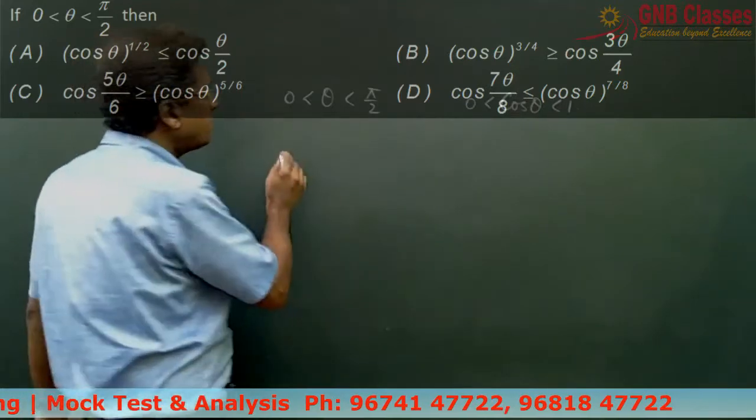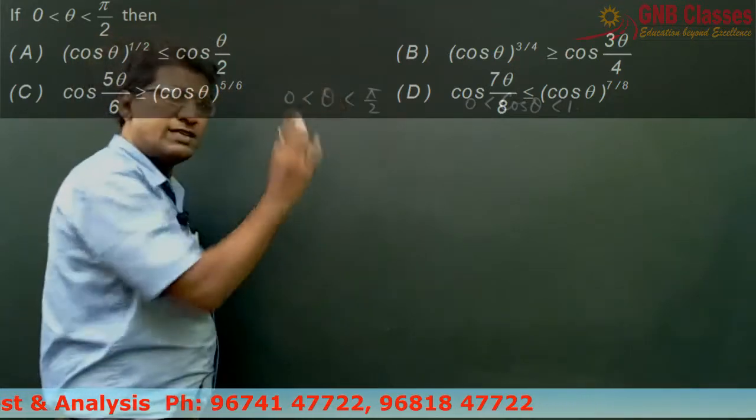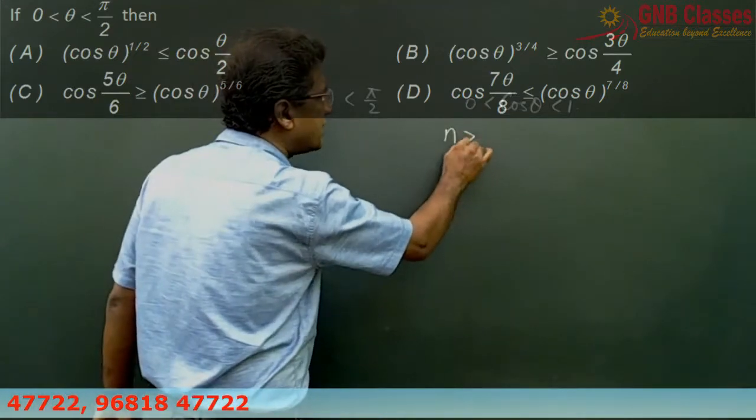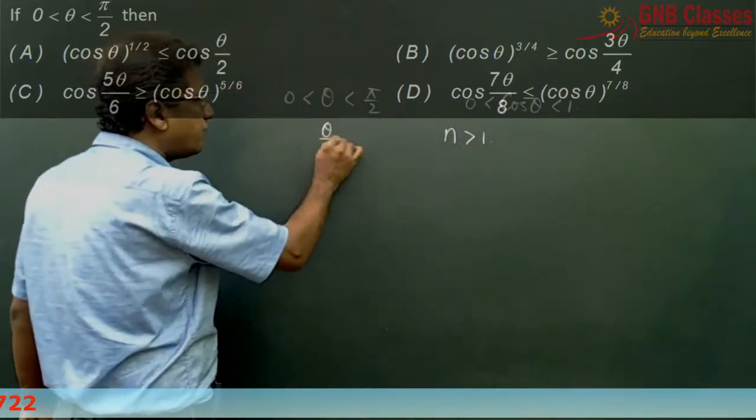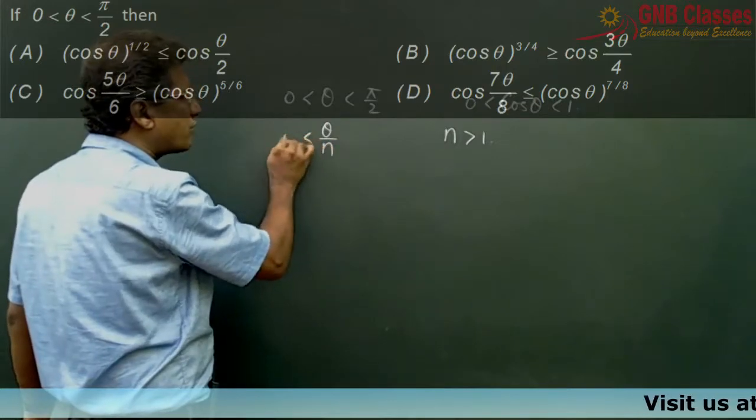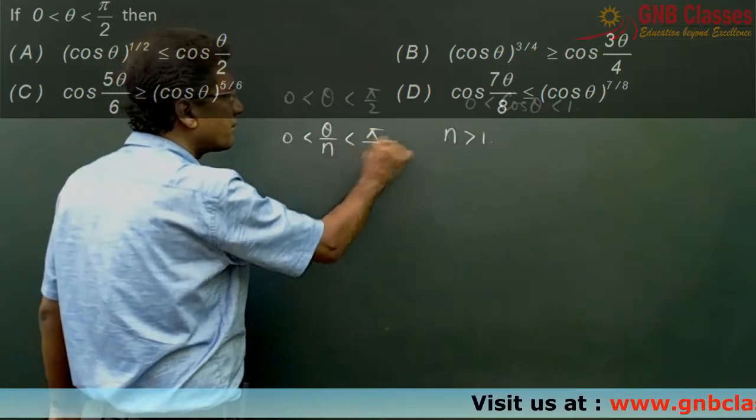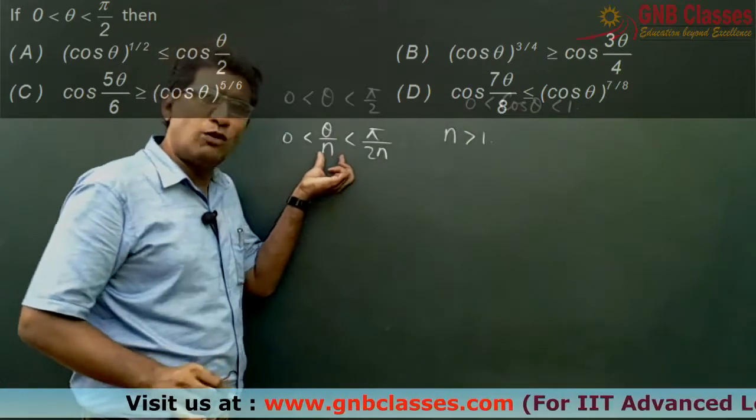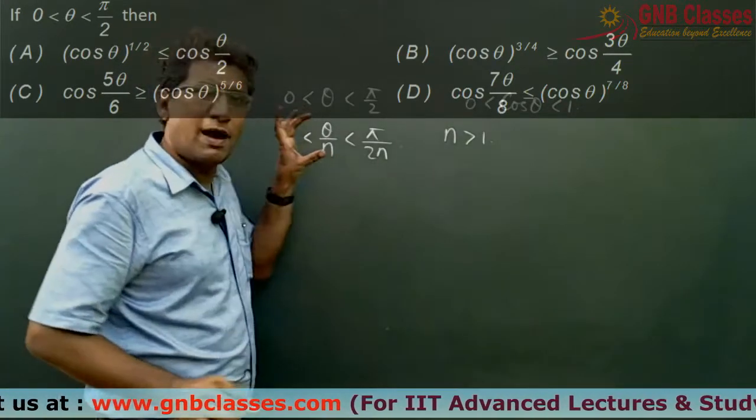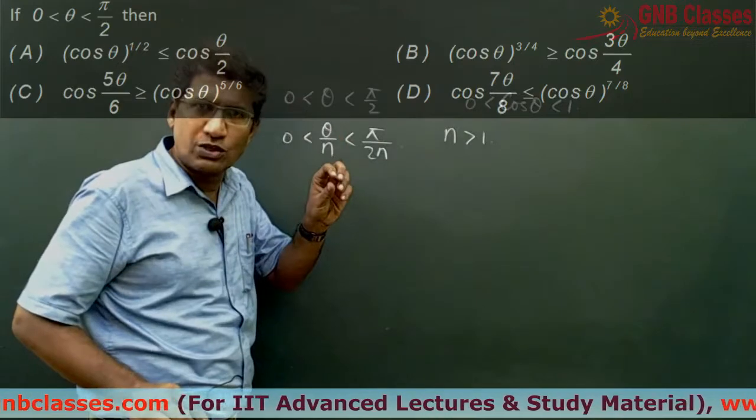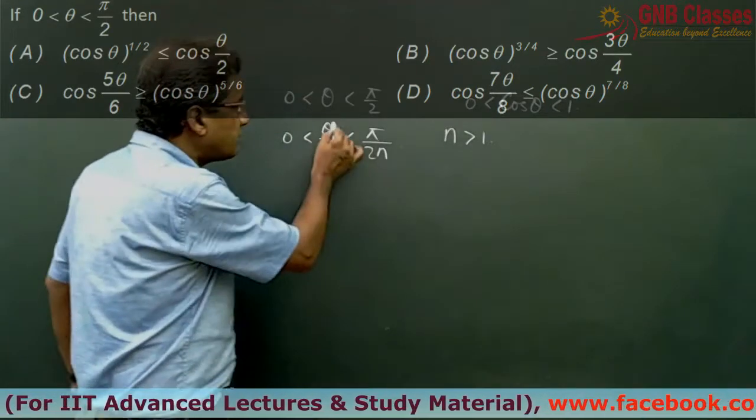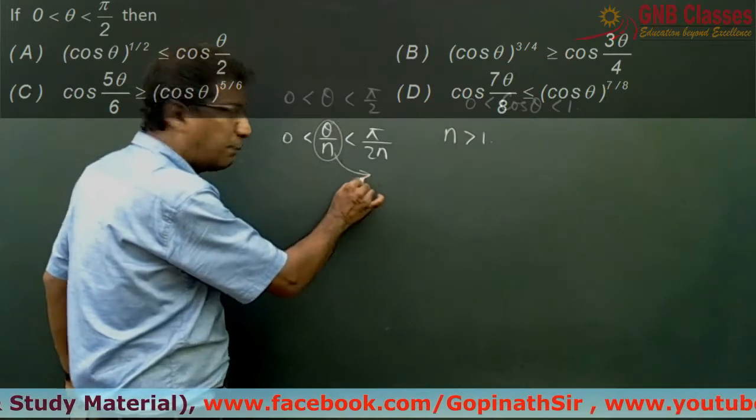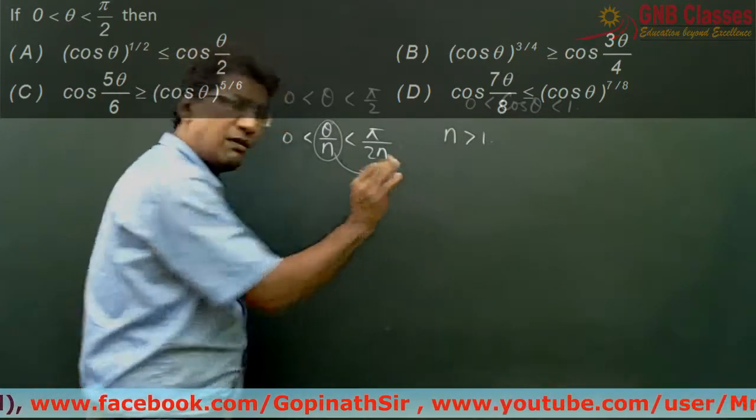Now if I try to reduce this theta, let us just assume that n is a real number which is greater than 1, and if we divide it by n so we are going to get something like this. So higher the value of n, your theta by n will be reduced. And it will be approaching, this theta by n will be approaching towards 0.